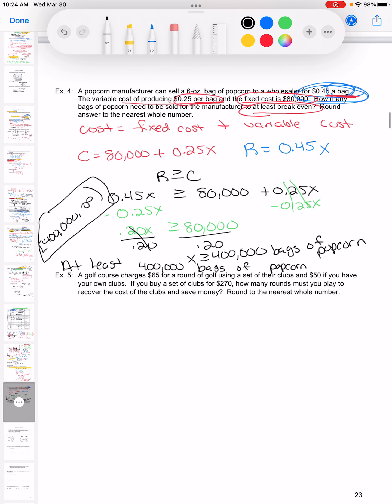All right, one more example. This one's a little bit different, it's actually easier to solve but maybe you have to think about it a little bit to set up. A golf course charges $65 for a round of golf using their set of clubs, but only $50 if you have your own clubs, so it's cheaper if you have your own clubs. You can go out and buy clubs that you found for $270. We need to see, is that a good idea? How many rounds of golf would it take to spend $270?